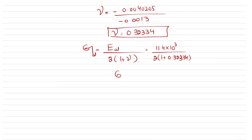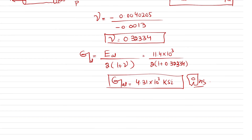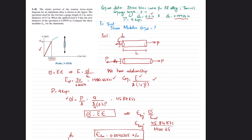Solving the expression gives the shear modulus G = 4.31 × 10³ ksi. This is the answer to problem 3.35. I hope you enjoyed this video. If you have any questions, you can ask in the comment section, and please subscribe and share with your friends.